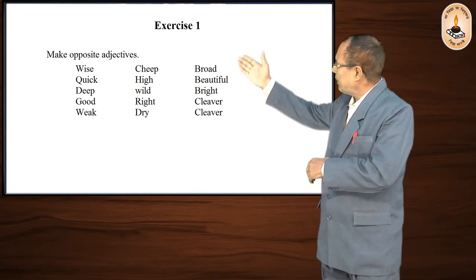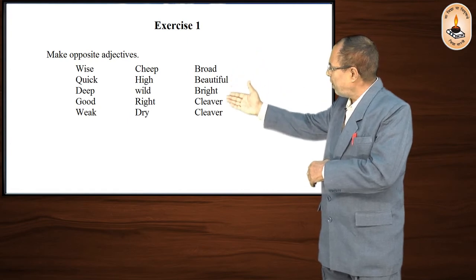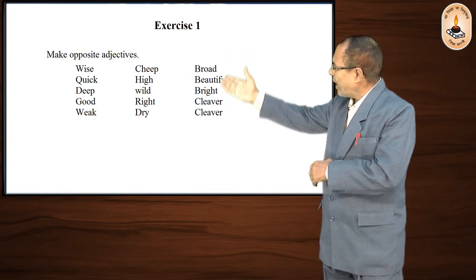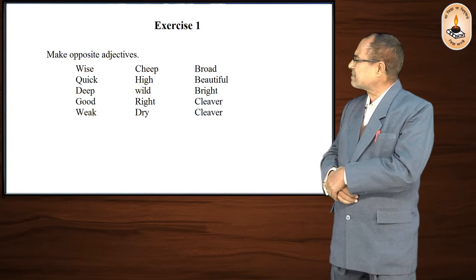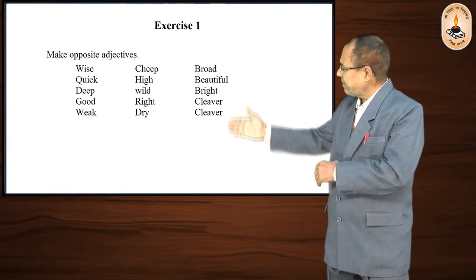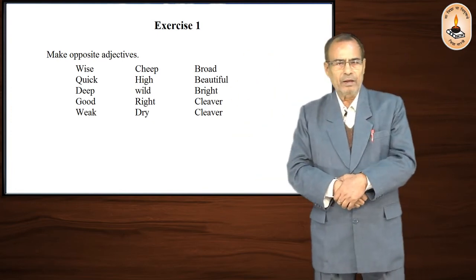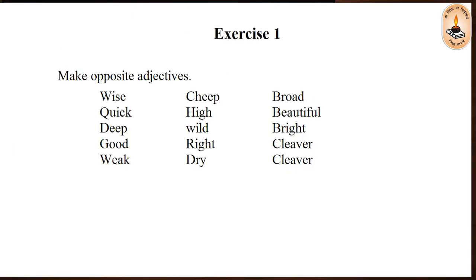Here, in the given table, you are given various adjectives just as the word wise. The opposite word to wise will be foolish, both are adjectives.